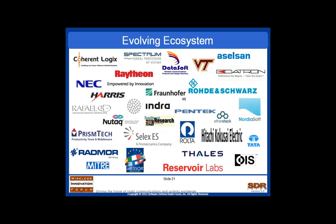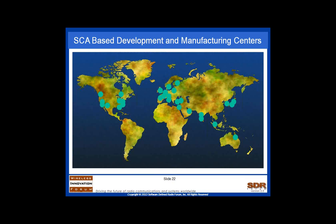Here is a sampling of the scope of the ecosystem that is evolving to support SCA development. The companies represented here cover a wide range of capabilities in the value chain: radio manufacturers, integrators, subsystem providers, waveform developers, middleware and tool vendors, and educational institutions. From a geographic perspective, it truly does cover most of the world where SCA activities are being performed — through radio development, tool development, or supporting software development.